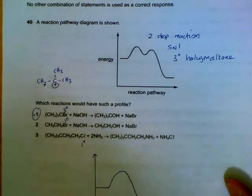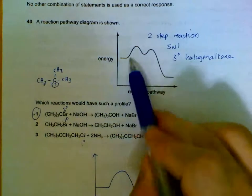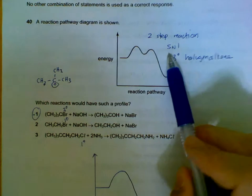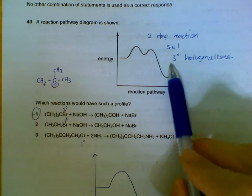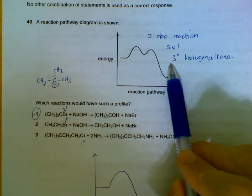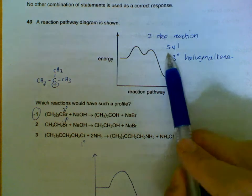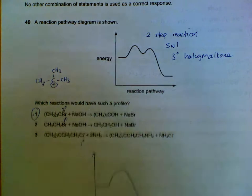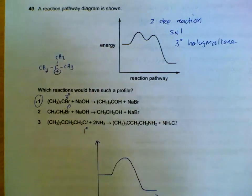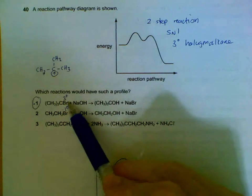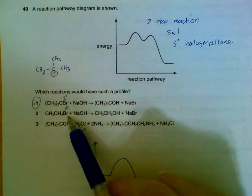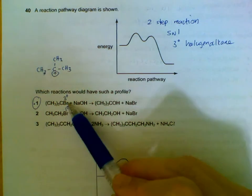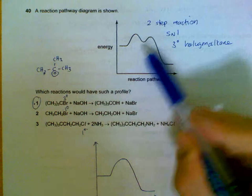Number 40, we have a reaction pathway. There are two humps. It means that it's a two-step reaction. Most likely, it means that it is a tertiary haloalkane because they undergo SN1 reaction. So we have to check which of the statements at the back are tertiary haloalkane. First one, tertiary. Second one is primary. The last one is also primary. So only the first haloalkane will undergo this two-step reaction.